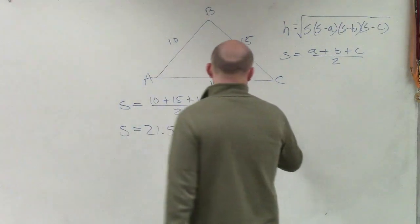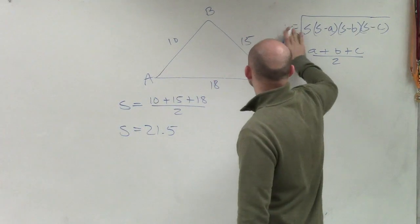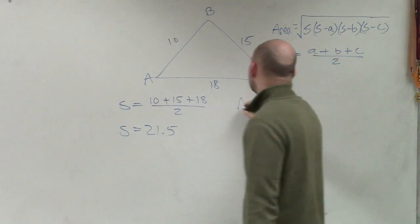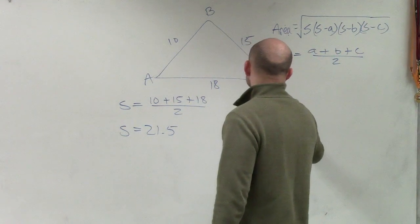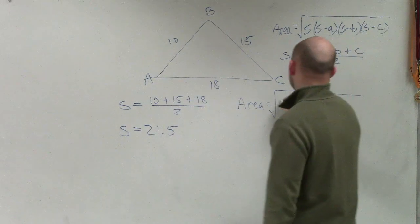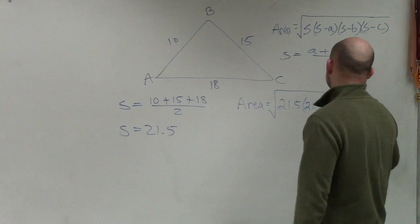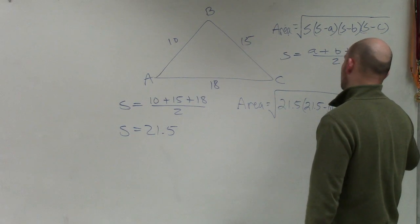Now, we just plug that into our formula. I don't know why I said that was h. Maybe because of Heron, but that's the area. So the area equals the square root of 21.5 times (21.5 minus 10) times (21.5 minus 15).